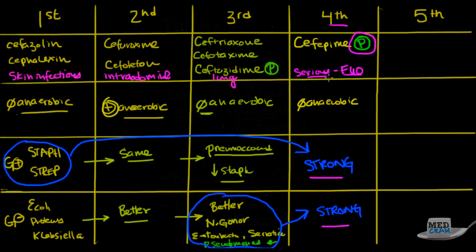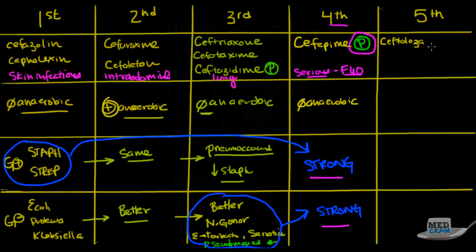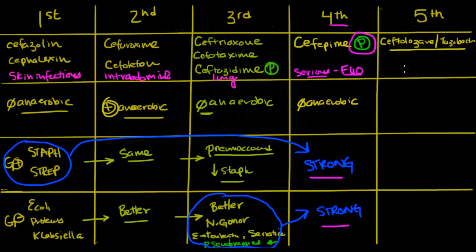When we go to the fifth generation, it is kind of unusual because there are very different players in that generation. The first one is ceftolazane, which is combined with tazobactam — a beta-lactamase inhibitor.